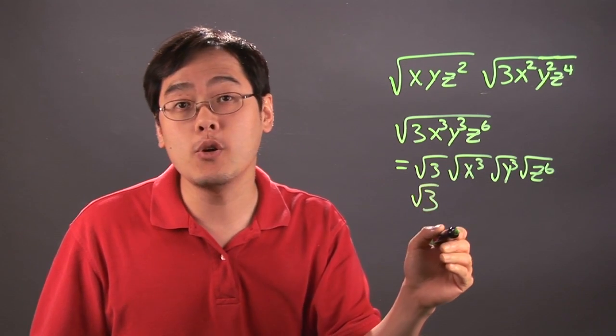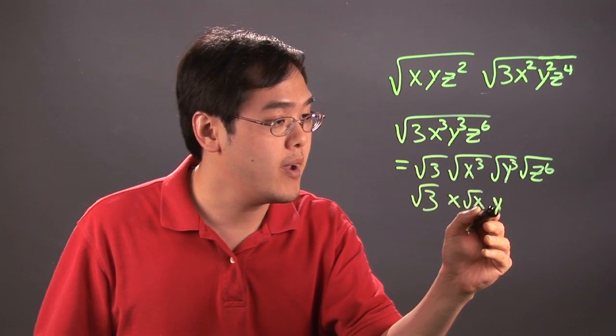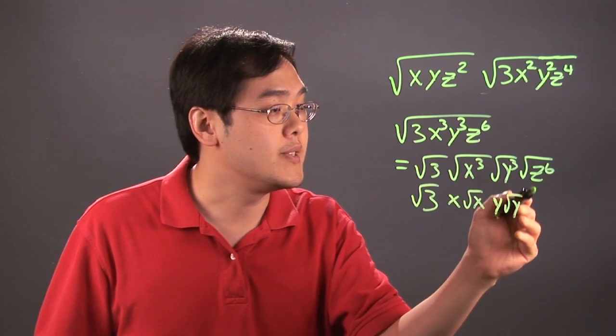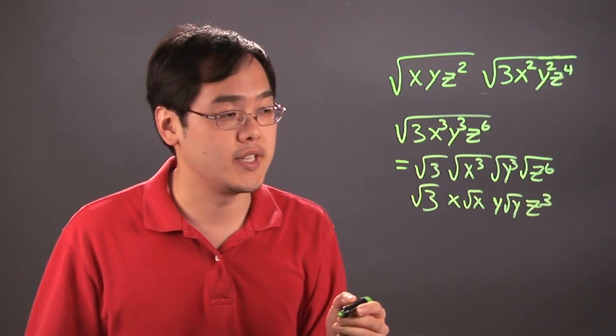Square root of x³ can be broken up as x times square root of x. Square root of y³, same way, is y times square root of y. And square root of z⁶ is z³ when all is said and done.